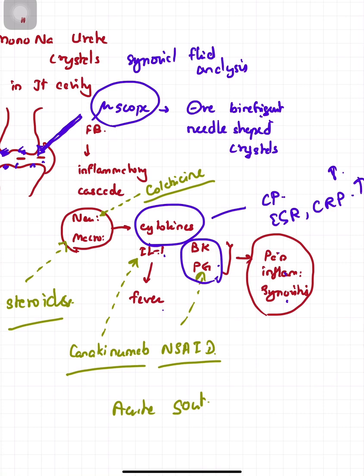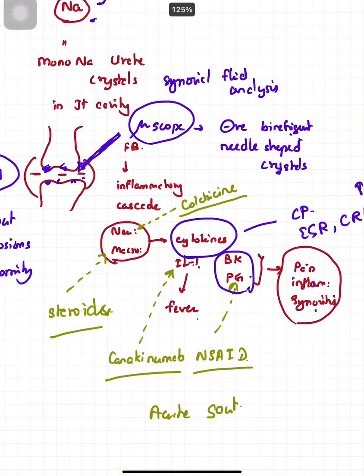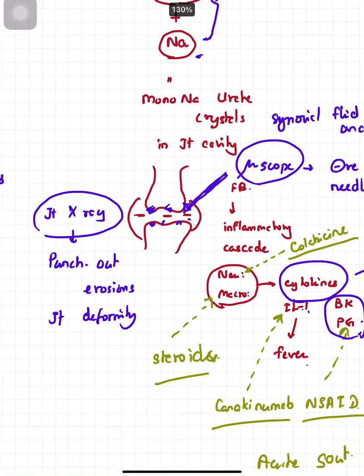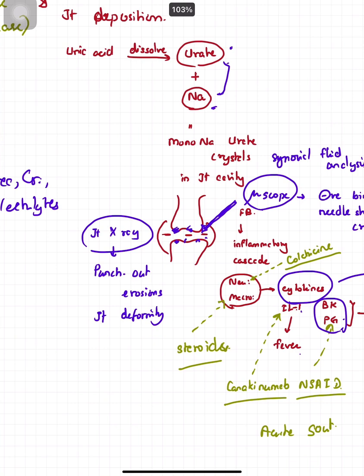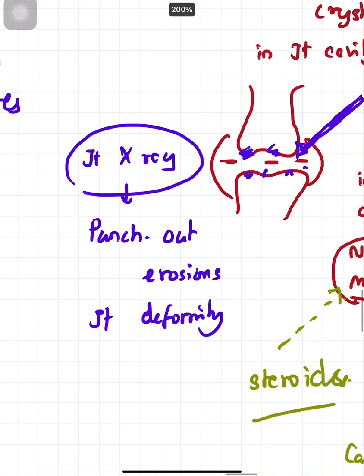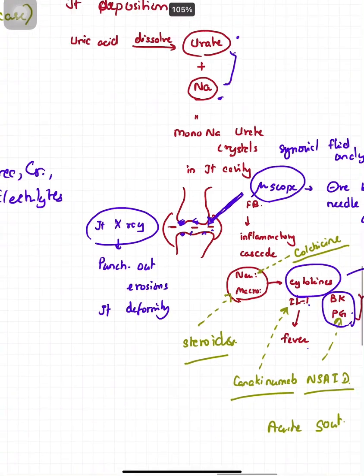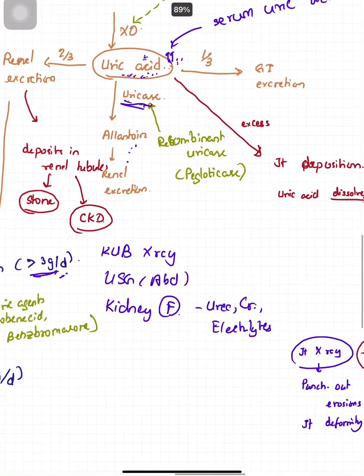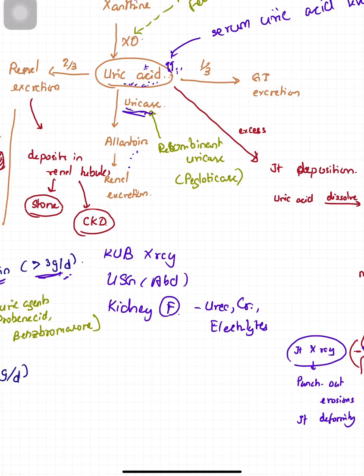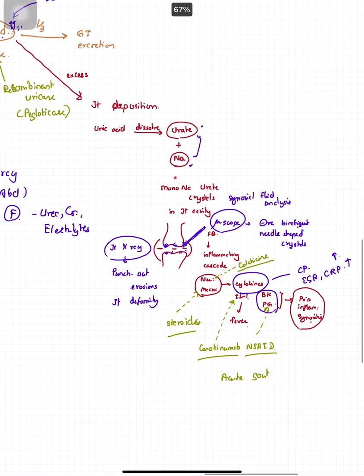Interleukin-1 may cause fever, so in acute gout one may suffer with fever and joint pain and synovitis. Because of accumulation of inflammatory markers, ESR and CRP will be increased, and there will be neutrophilia on blood count. In chronic cases there will be punched-out lesions, bony erosion, and joint deformity visible on joint X-ray, though not visible in early cases.